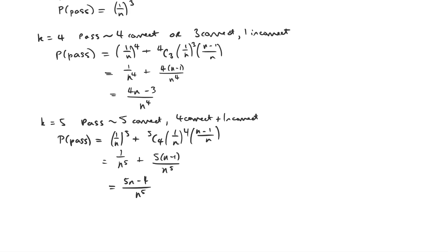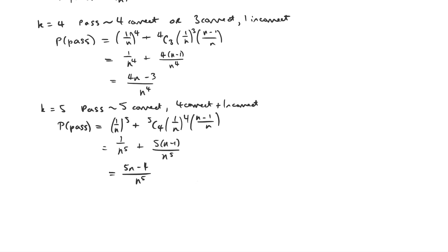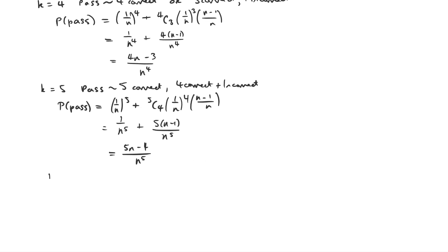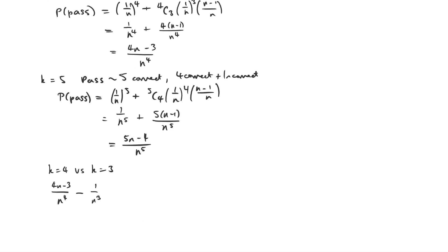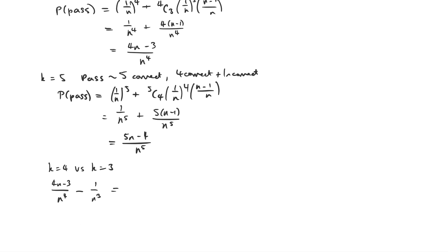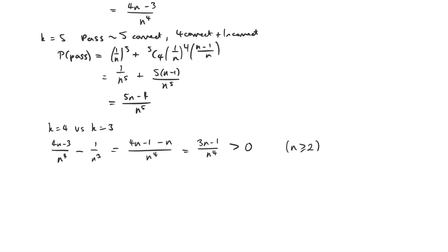That argument is quite hard to make really clearly on paper, so the easiest thing is to compare these algebraically. Looking at K equals four versus K equals three: taking four N minus three over N to the four minus one over N cubed, putting these over a common denominator of N to the four gives three N minus one over N to the four, which is greater than zero since N is always greater than or equal to two.